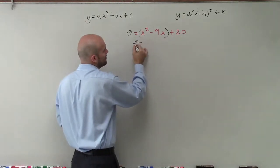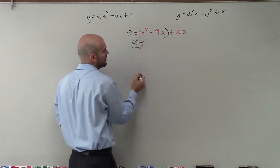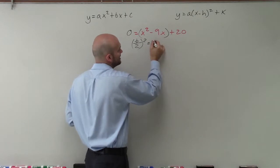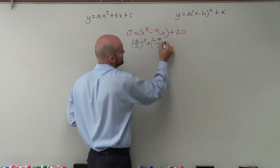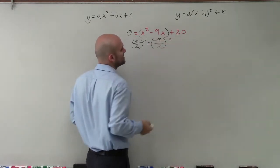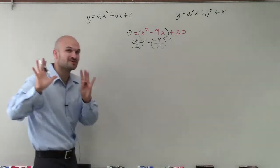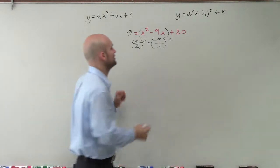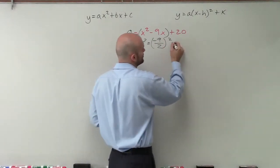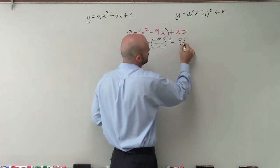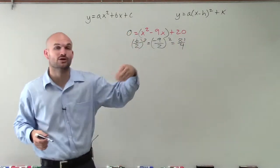So what I'm going to do is I'm going to take my b divided by 2 and then square it. So in this case, my b is a negative 9 divided by 2 and then square it. Well, negative 9 divided by 2, that's going to be a decimal. So let's keep it as a fraction. So negative 9 divided by 2, that's going to equal 81 over 4 because, remember, you have to square the numerator and the denominator.